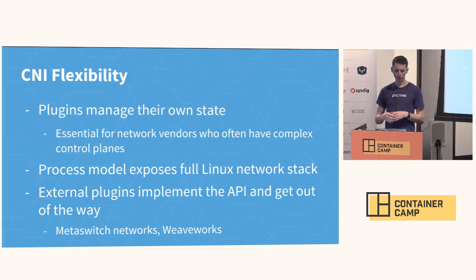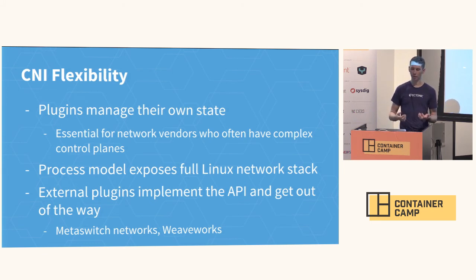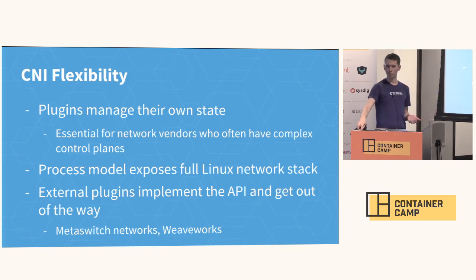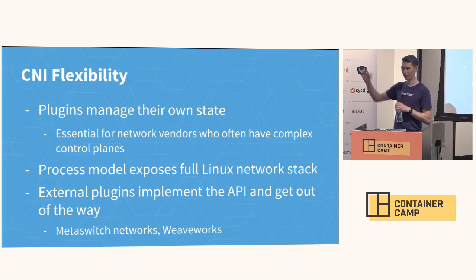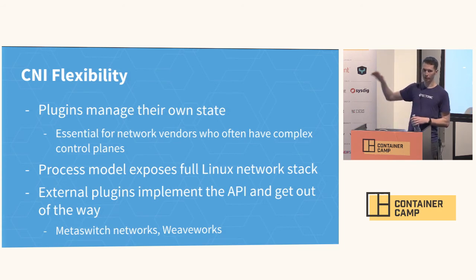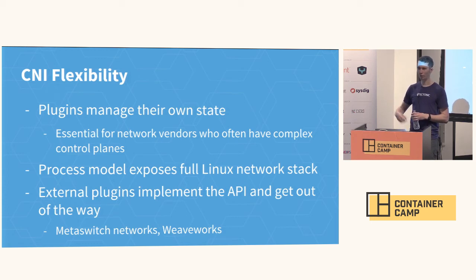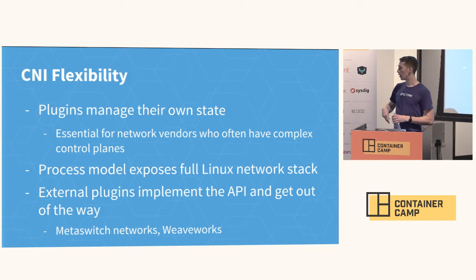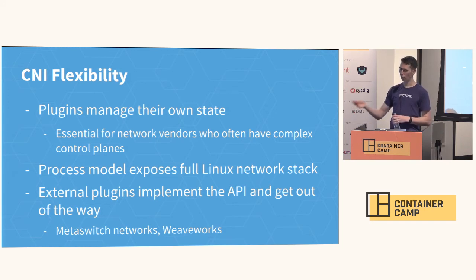You execute the actual plugin with its JSON configuration piped into standard in. Because this all runs as a separate process, it allows for a lot of flexibility. Plugins are able to manage their own state — they just get executed every time a new container comes up or a container is destroyed. This is really essential because a lot of network providers have really complex control planes. It's important to them that they continue to have these complex control planes that do add value, allowing you to set rules, consumption rules, operations rules, and firewall rules. It exposes the entire full Linux stack because all we do is execute a process inside the network namespace. CNI says: implement the interface — if you're able to deal with standard in, standard out, and some environment variables, then go for it. And that's where the spec ends.